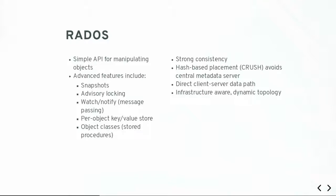Each object in Ceph can have a key-value store associated with it, often used for storing metadata alongside data. This is used in the S3 implementation to store metadata about your buckets, and in CephFS to store information about directories and what files exist. We also have object classes - stored procedures that you can add to the system - a pluggable operation interface. A few people have written statistics and accounting procedures that we've added to the code base.